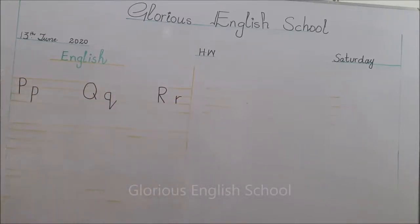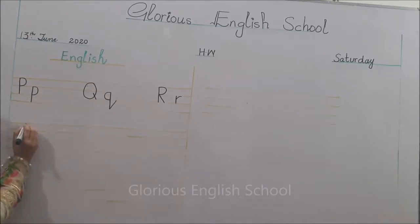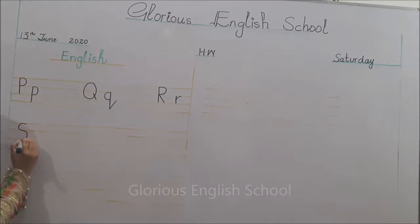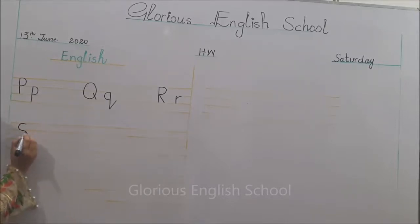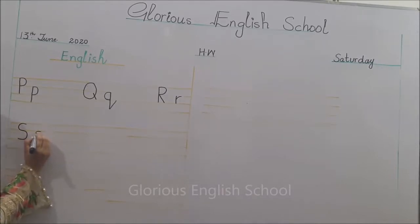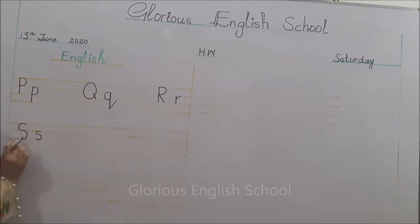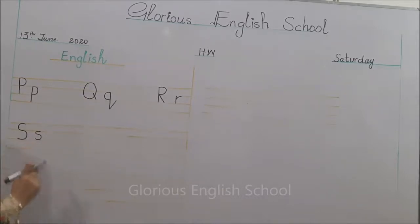R के बाद next letter है S। Two curves बनाएंगे। Small s भी ऐसे ही लिखेंगे - mid की two lines में जैसे हमने capital S लिखा है। Capital S, small s।